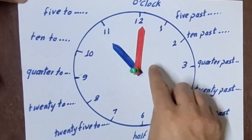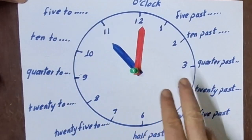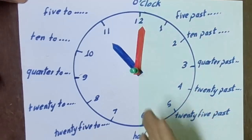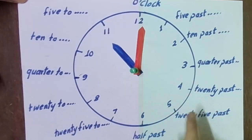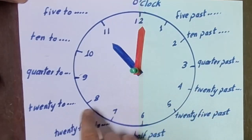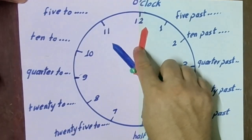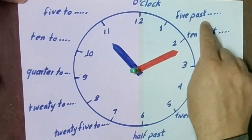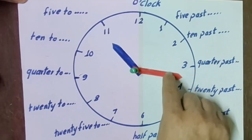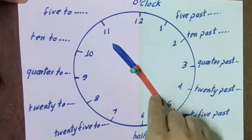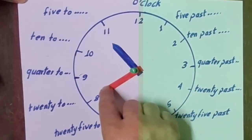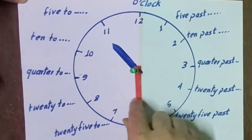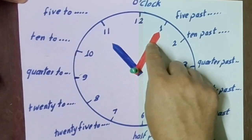I'll divide my watch or the clock into two halves: the right half and the left half. When the long hand is on the right half, we will say 'past.' When it goes to the left half, we will say 'to.'